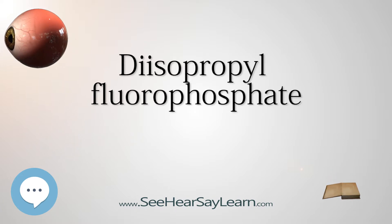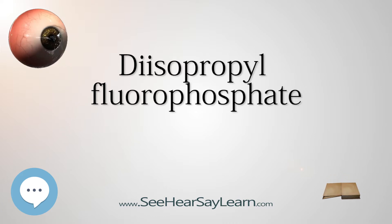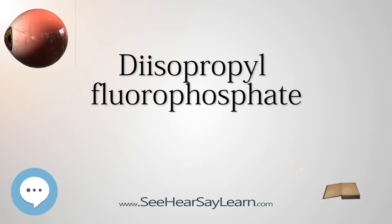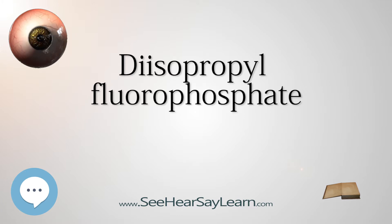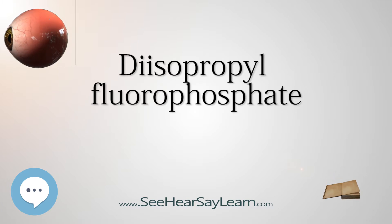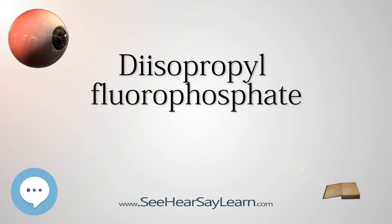Diisopropyl fluorophosphate is a very potent neurotoxin. Its LD50 in rats is 6 mg/kg oral. It combines with the amino acid serine at the active site of the enzyme acetylcholinesterase, an enzyme that deactivates the neurotransmitter acetylcholine. Neurotransmitters are needed to continue the passage of nerve impulses from one neuron to another across the synapse. Once the impulse has been transmitted, acetylcholinesterase functions to deactivate the acetylcholine almost immediately by breaking it down.